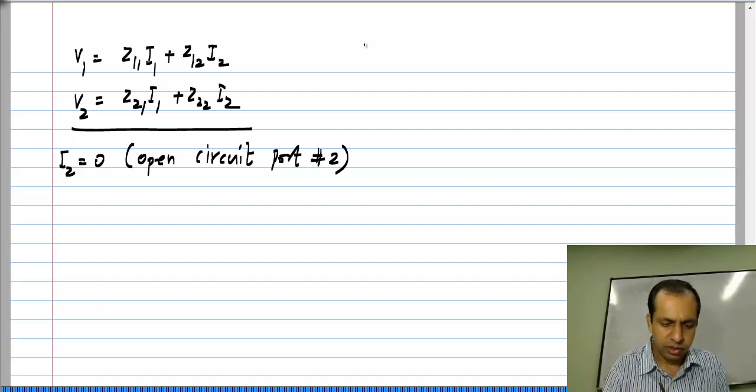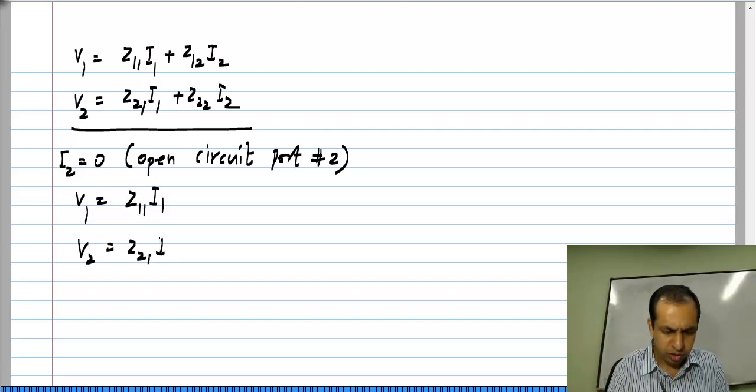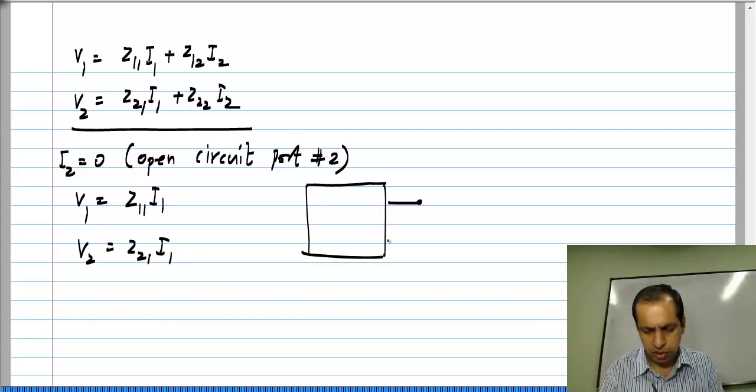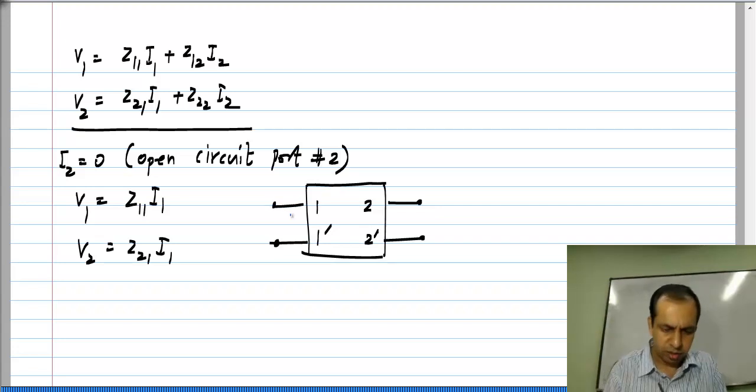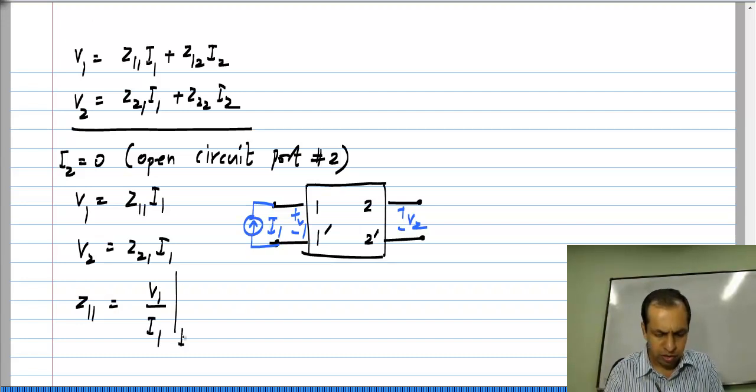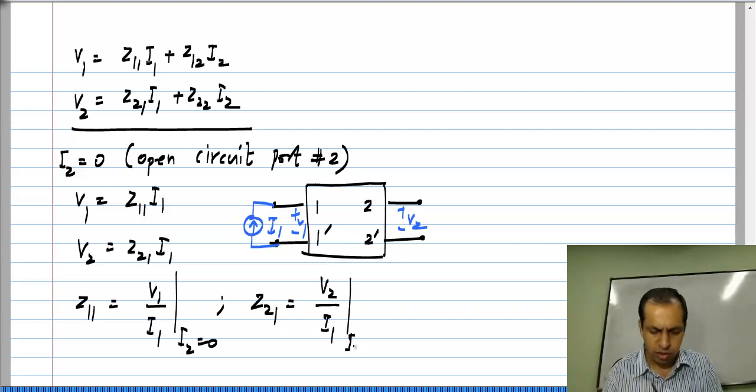So, under those conditions what happens? You will get V1 to be Z11·I1 and V2 to be Z21·I1. In other words, you leave the second port open and you apply current I1 to the first port and you measure both V1 and V2. So, from that we easily see that Z11 is V1 by I1 with I2 set to 0 and similarly Z21 is V2 by I1 with I2 set to 0.